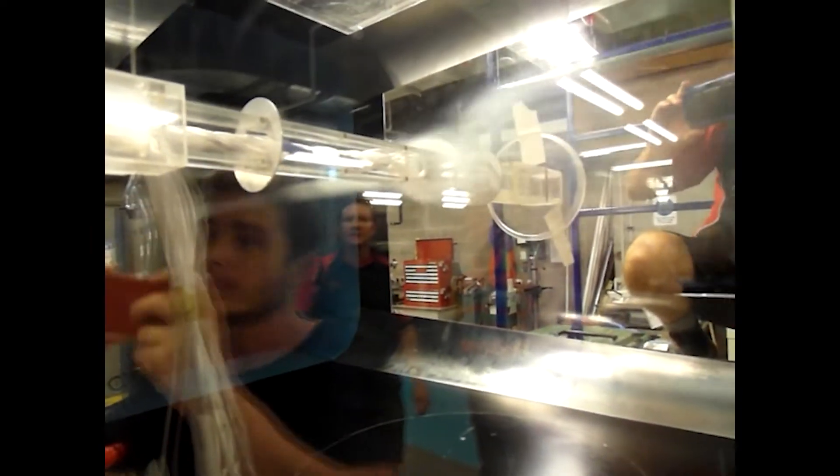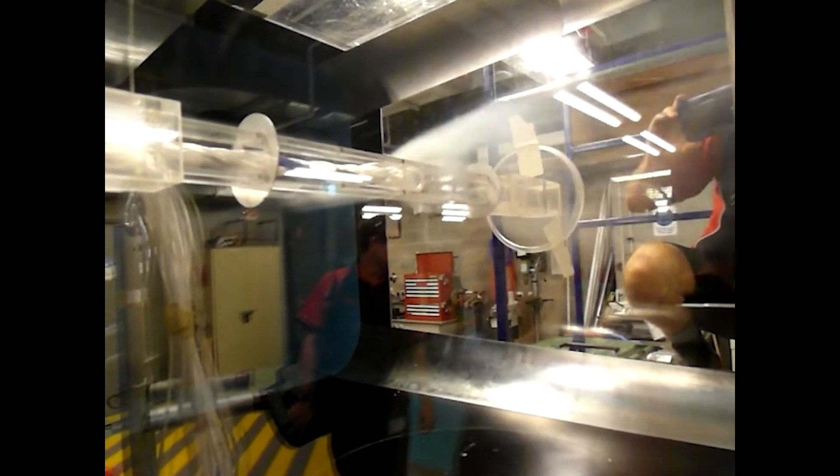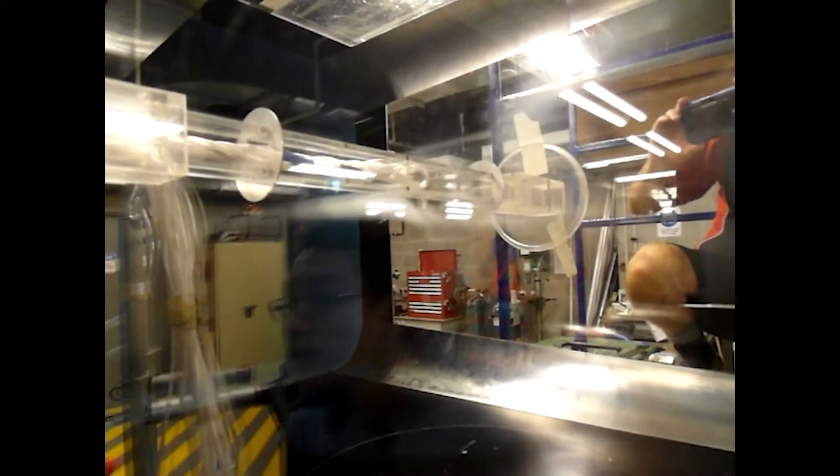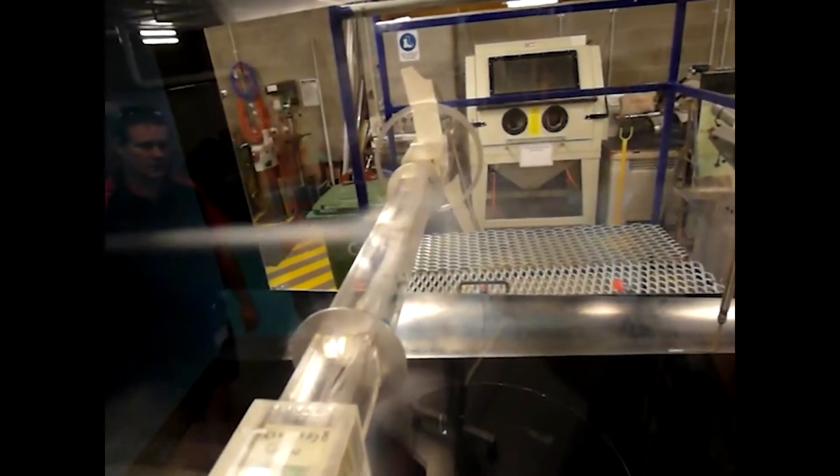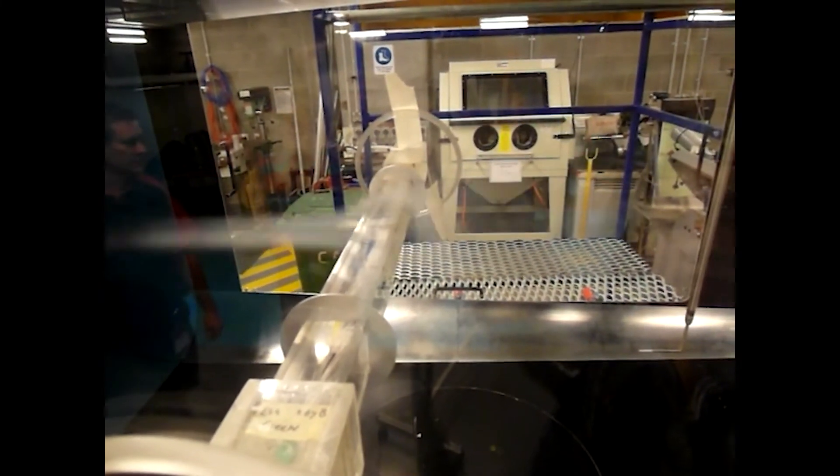The vortex shedding motion is illustrated in this movie. The wind flow direction is from left to right, and the smoke injection is enabled to visualize the vortices shed alternately from one side to the other, resulting in a pattern of vortices rotating in opposite directions behind the cylinder.